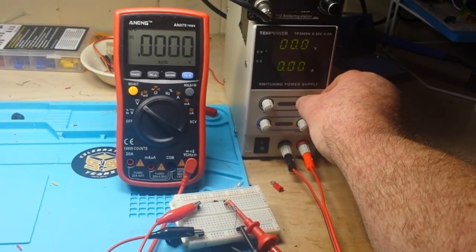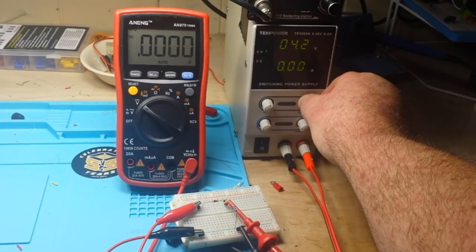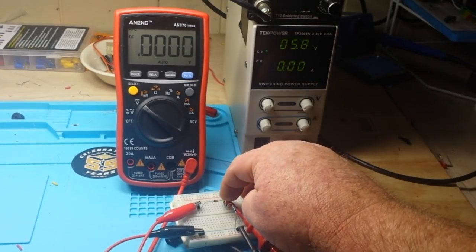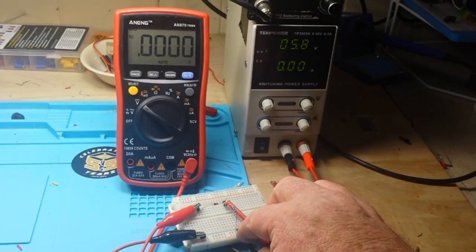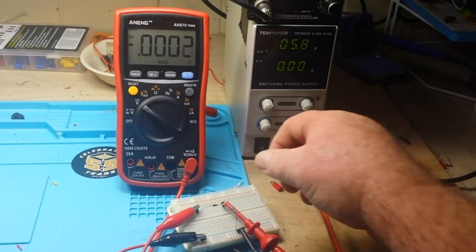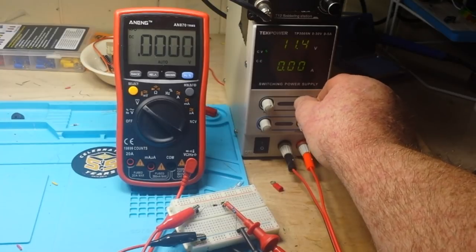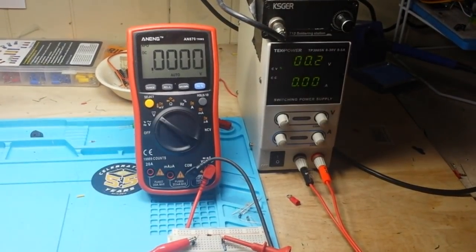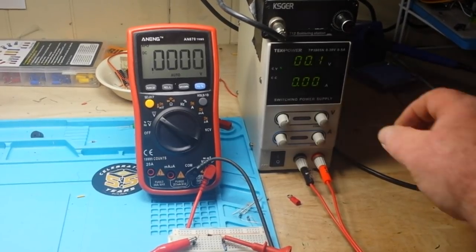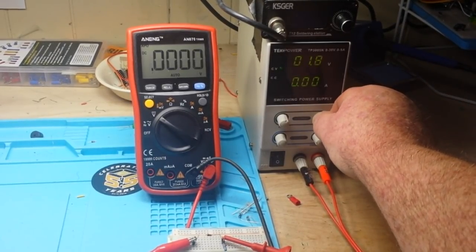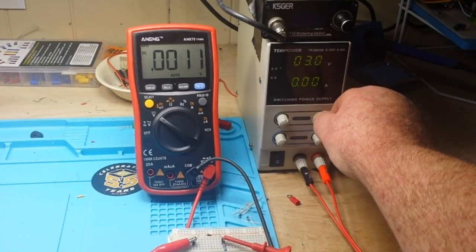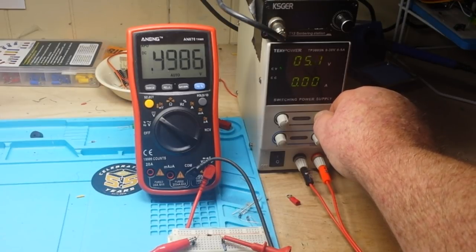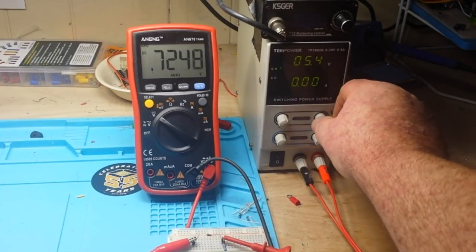It would help if things are actually connected. With the multimeter wire connected, okay, so we apply voltage, we approach the breakdown voltage of the zener, there we are.